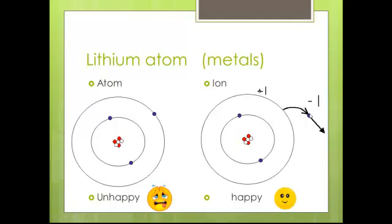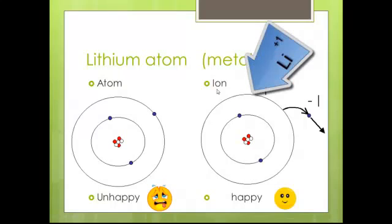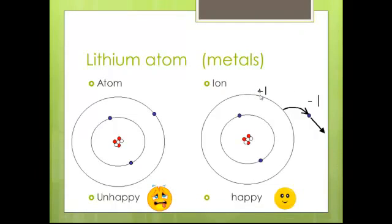How does lithium become happy? Well, if it loses this electron, then its outermost shell has two, and the first shell only holds two, so it's full. It's no longer an atom, though. Now it has a charge. It has a plus one charge. It is called the lithium ion. It has a plus one charge. All metals form positive ions.